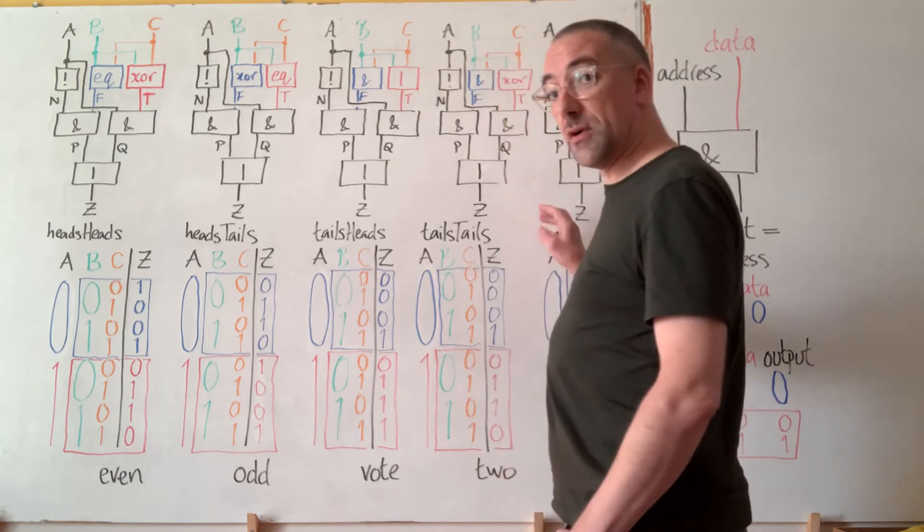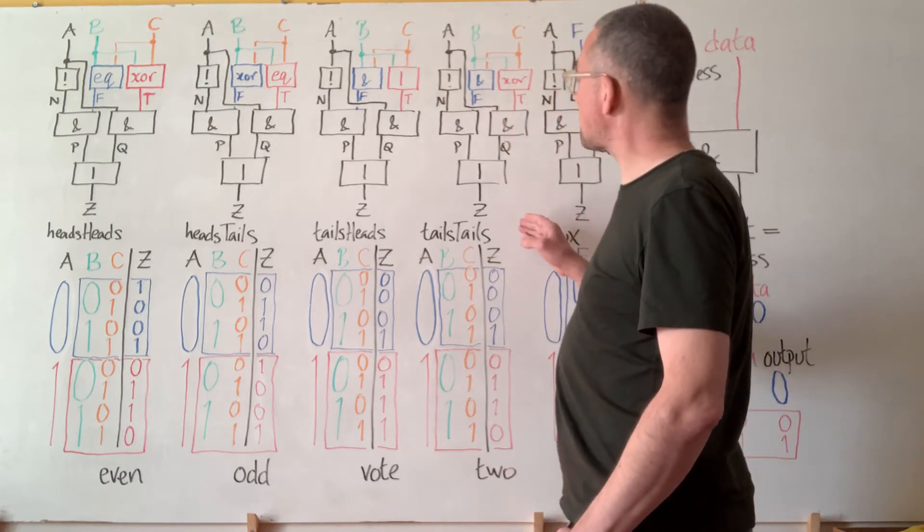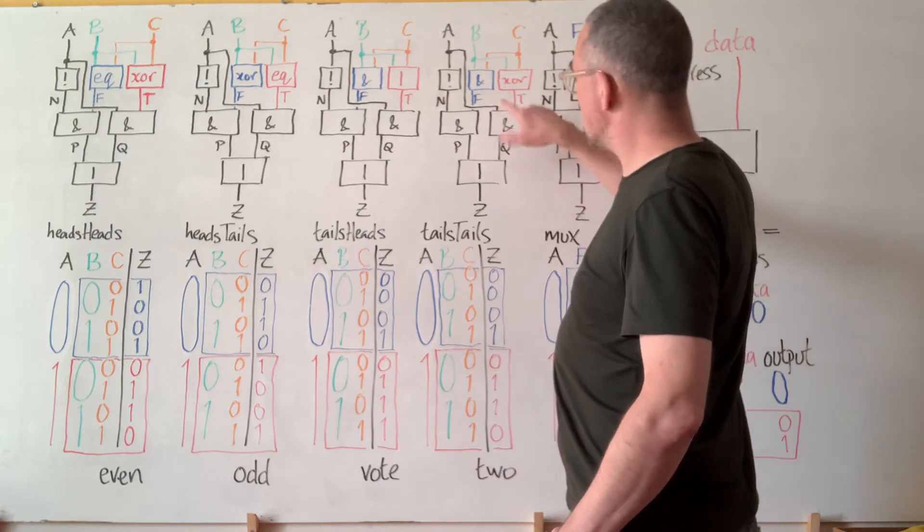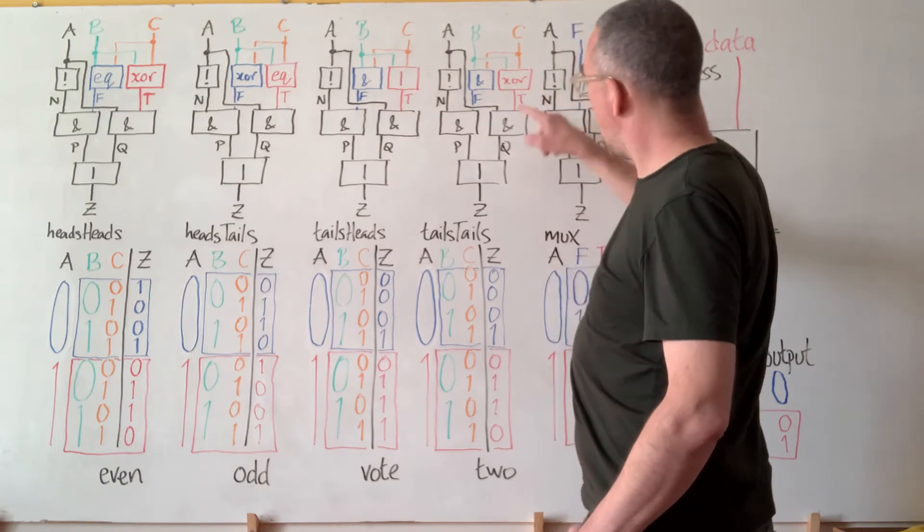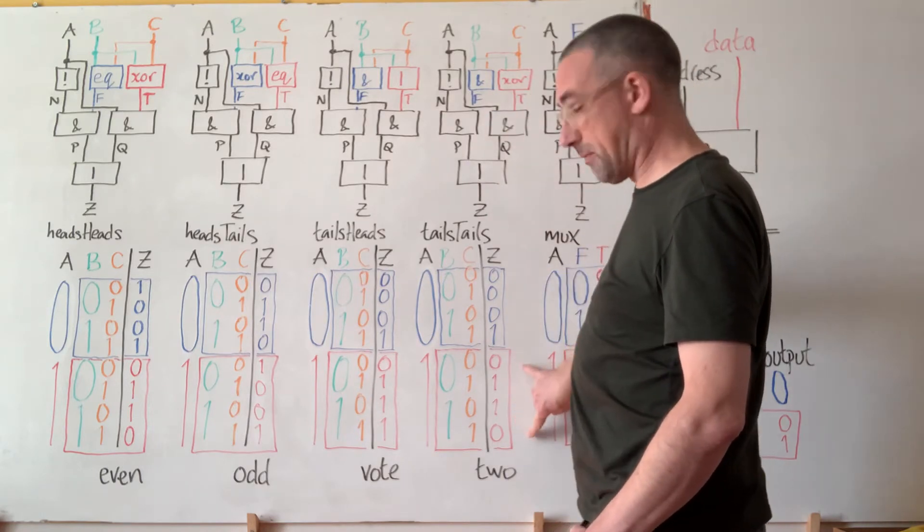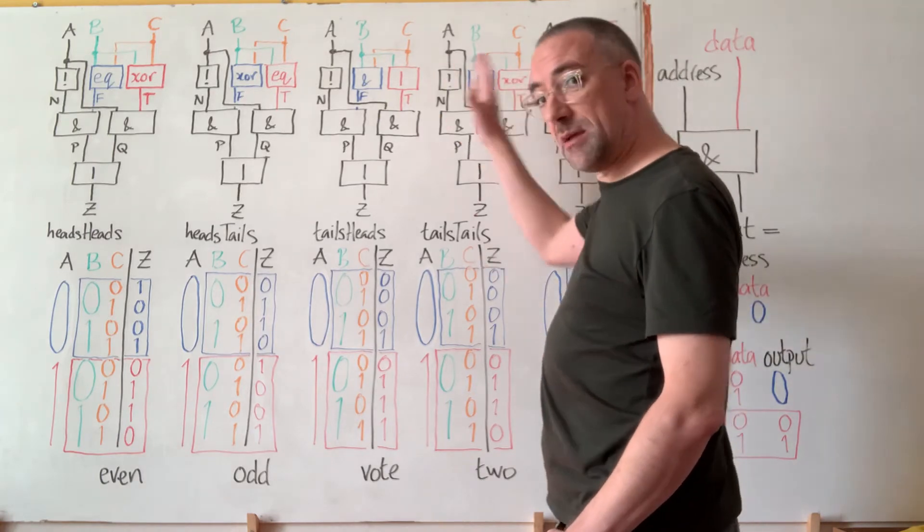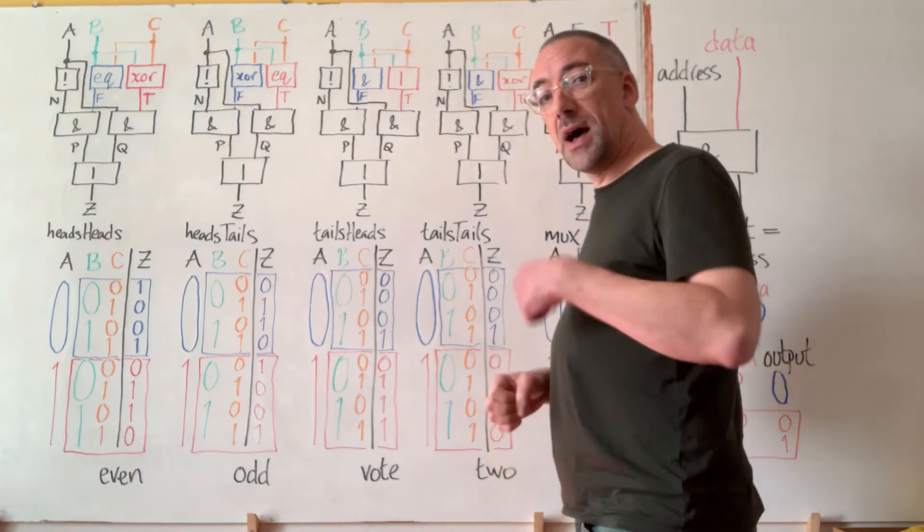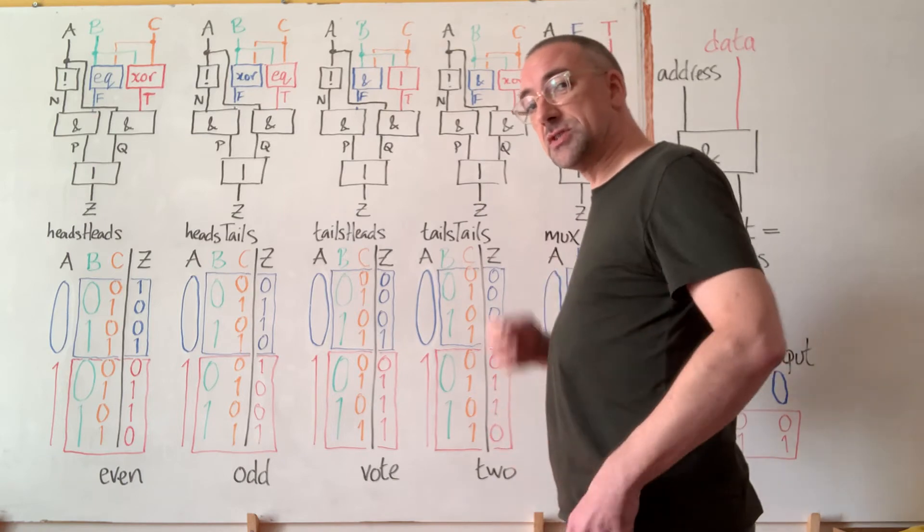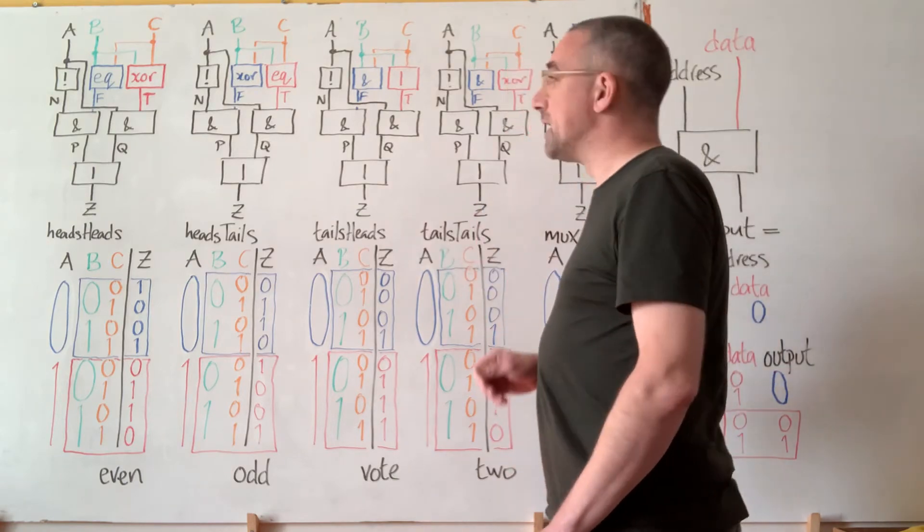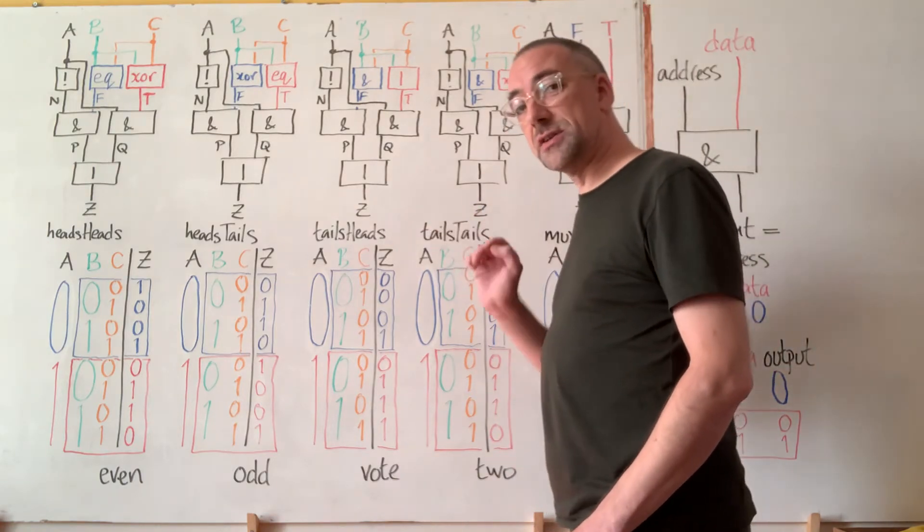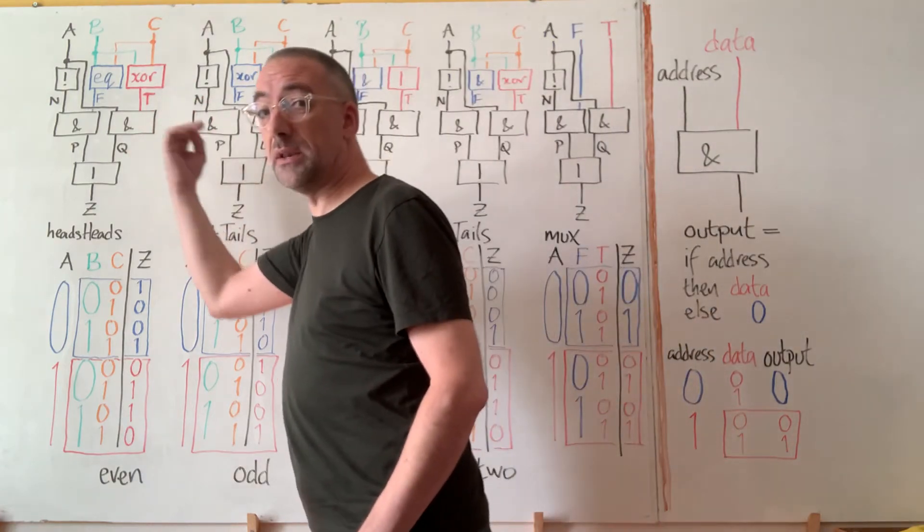And then finally for tails tails the top half is coming from AND and the bottom half is coming from XOR. So again the same use of ANDs to switch things on and off is giving us a circuit that now switches between two things.